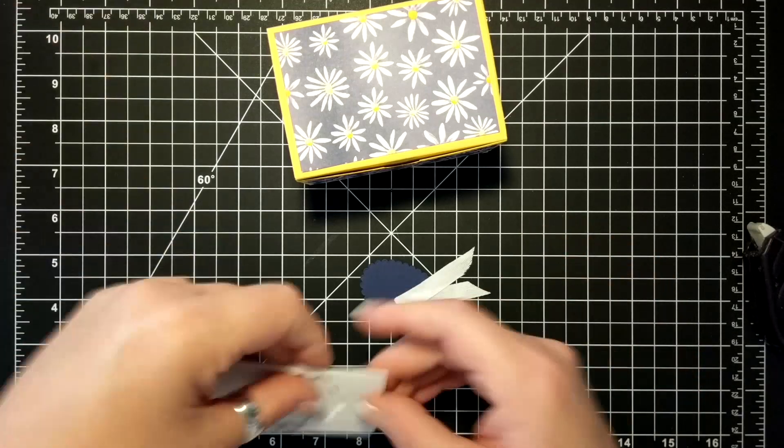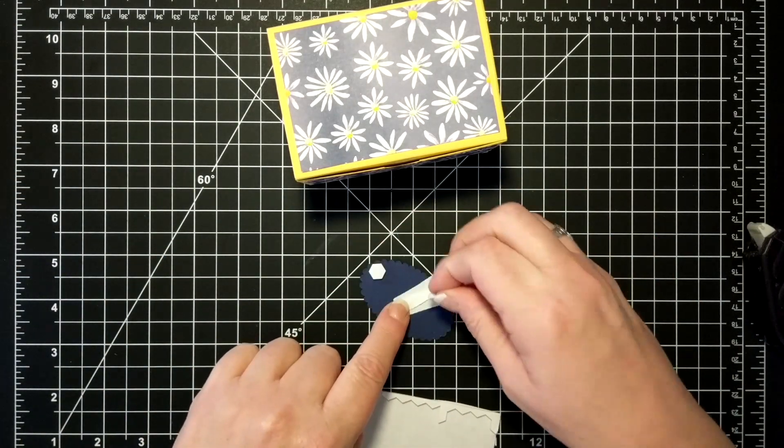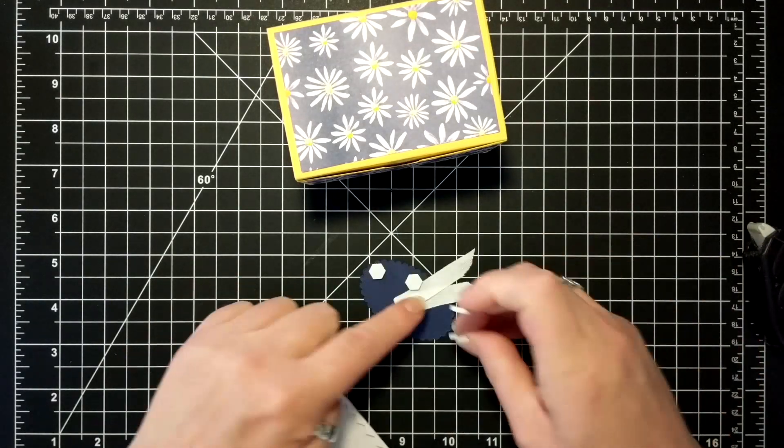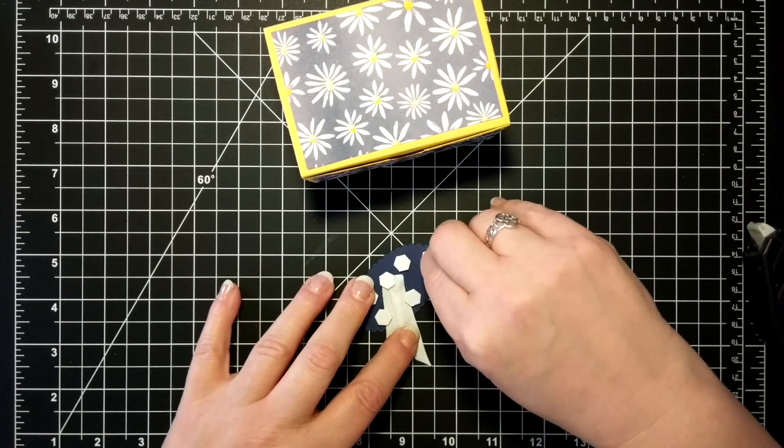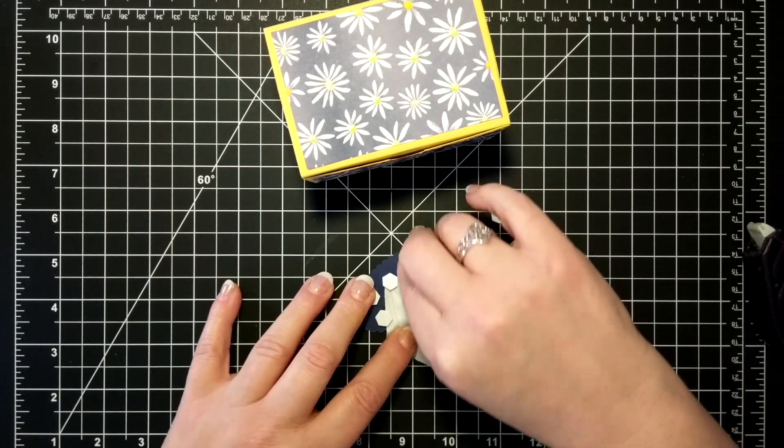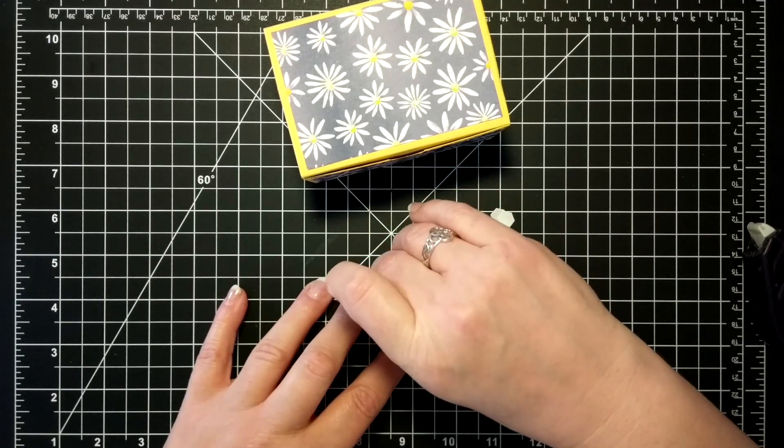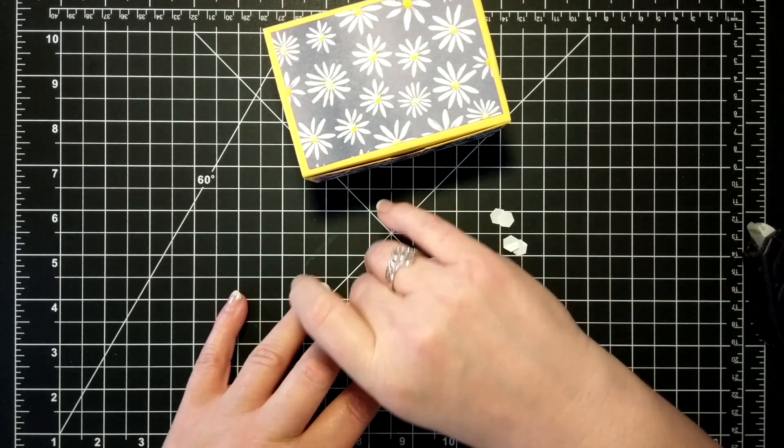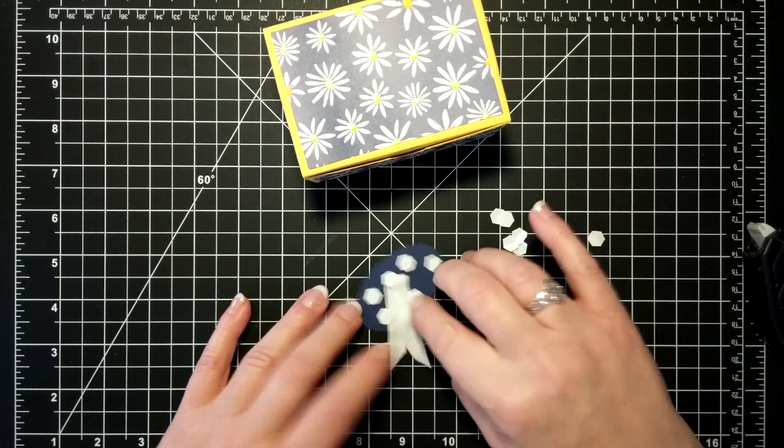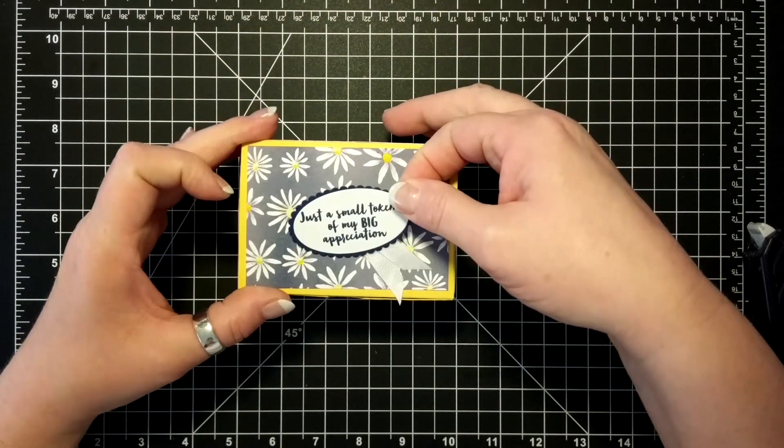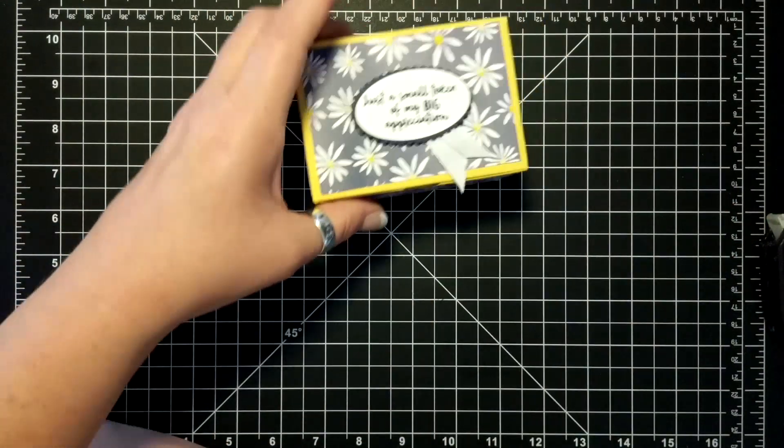And then I have some dimensionals. These are left over from a paper pumpkin kit I did recently. So I'll use them up, try to trap that ribbon in. I find that the ones that come, the dimensionals that come in the paper pumpkin kit are just a little thicker. So if you wanted to add even more dimension, they're perfect for that. There you go.